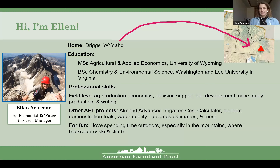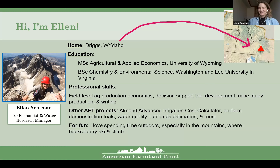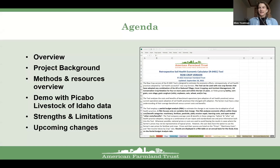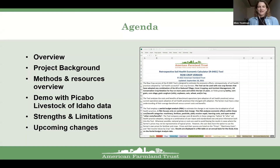On the registration site that Jen is sharing in the chat, you'll see this webinar schedule and links to recordings, including the most recent November 1st Prioritize Target Measure app presentation. Next month on January 10th, the second Wednesday of the month due to the January holiday, Glenn O'Neill with Michigan State University and Ken Genskow with the University of Wisconsin-Madison will present how to implement the Social Indicator Planning and Evaluation System, SIPES, including how the Social Indicators Data Management System, SIDMA, can quantify your project's impacts. I really encourage you to join that event — it's the one social tool in the webinar series. And now, without further ado, here's Ellen Yateman with the Retrospective Soil Health Economics Calculator.